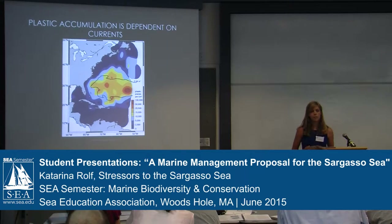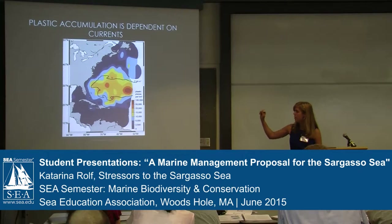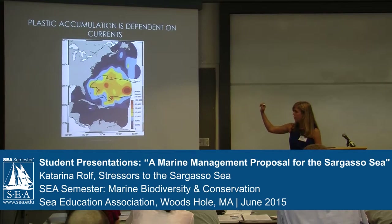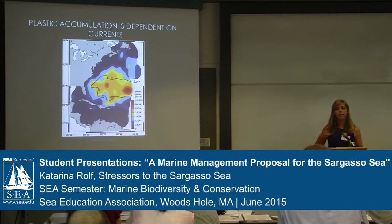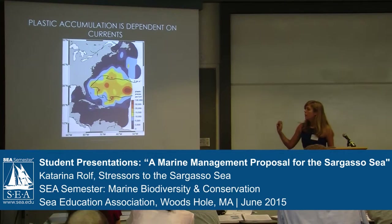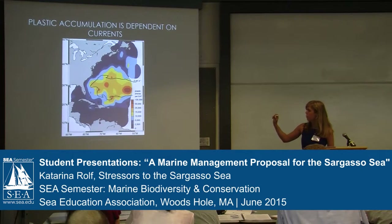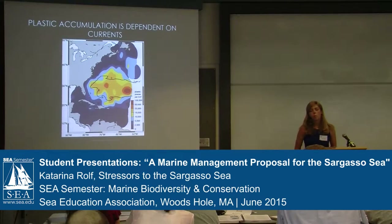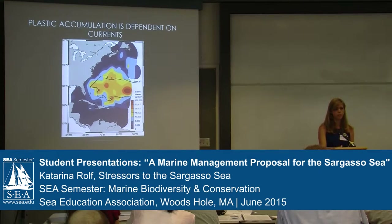The Sargasso Sea is a hotspot for the accumulation of these plastics because of the way the currents move. The Sargasso Sea is bounded by four or five major currents — two to the south, one on the west, one to the north, and one to the east. The way these currents move together makes it easy for them to pick up debris and dump it right into the middle of the gyre, which is where the Sargasso Sea is located. A study by Carol Lavender-Law, an SEA researcher, showed that the highest accumulation of plastics was right within the Sargasso Sea — a problem for all the species we've been talking about today.